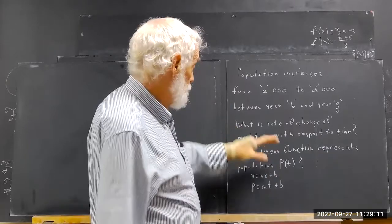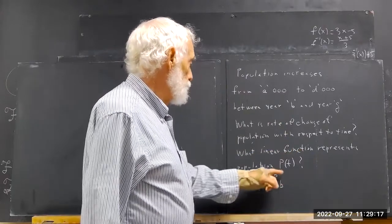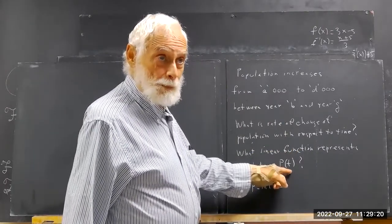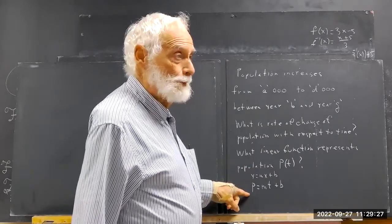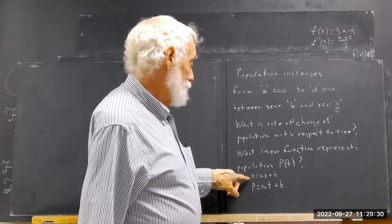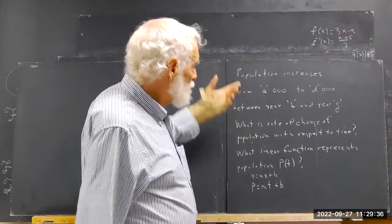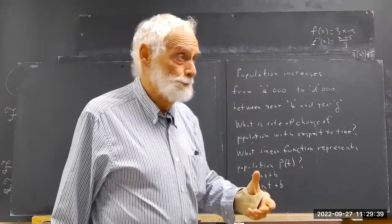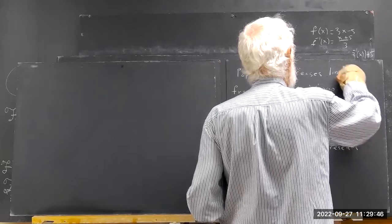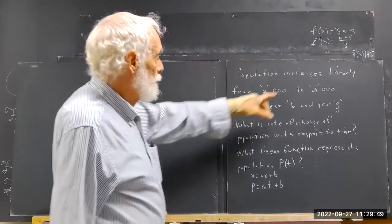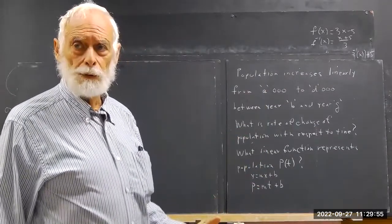You can stop right there and answer that question, then go on. You're going to find a linear function that represents population P of T. Later on I gave you an M, some of you needed, some of you didn't. The standard equation for a straight line is y equals mx plus b. Now, I didn't say the population increases linearly, and I should have, but it increases linearly and that's kind of implicit because that's exactly what you were asked to do on your homework.